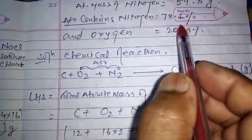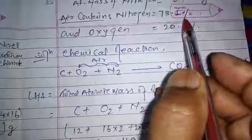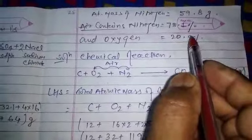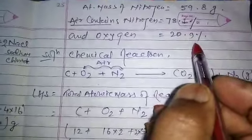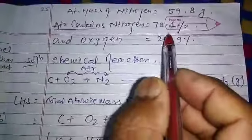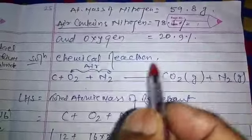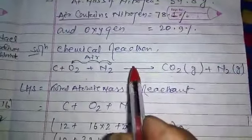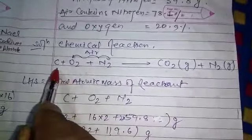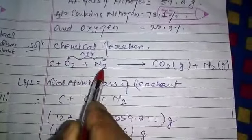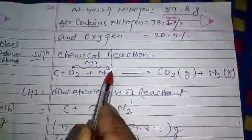We all know that air contains nitrogen at 78 percent and oxygen at 21 percent in round figures. Here it's written accurately: 78.1 and 20.9 percent. So the chemical reaction is given. Carbon is reacted with oxygen and nitrogen taken from air.